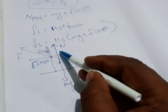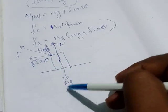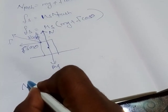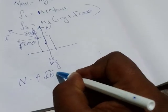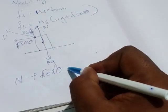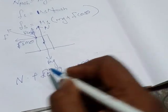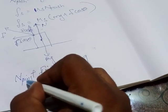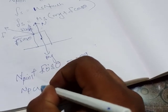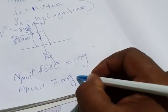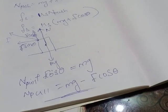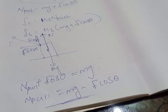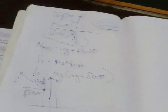While pulling the object, the upward forces are the normal force and F cos theta, while downward is only Mg. So: N_pull = Mg − F cos theta. The downward force is reduced, which means it will be very easy to pull an object compared to pushing it.